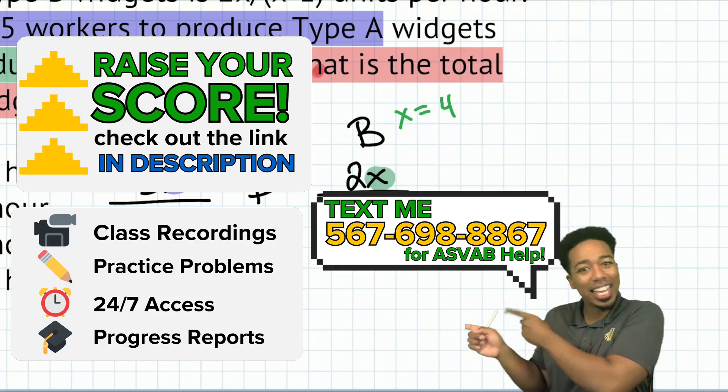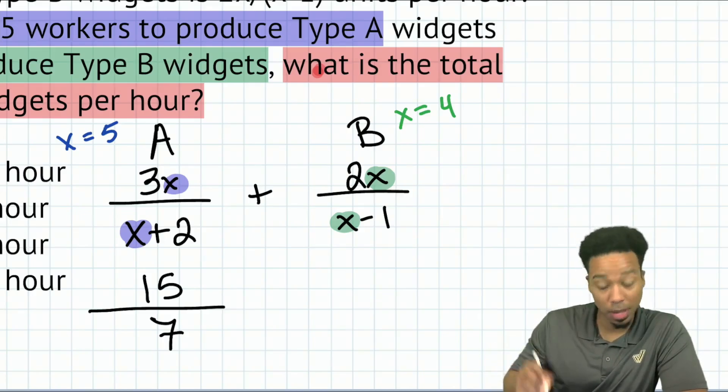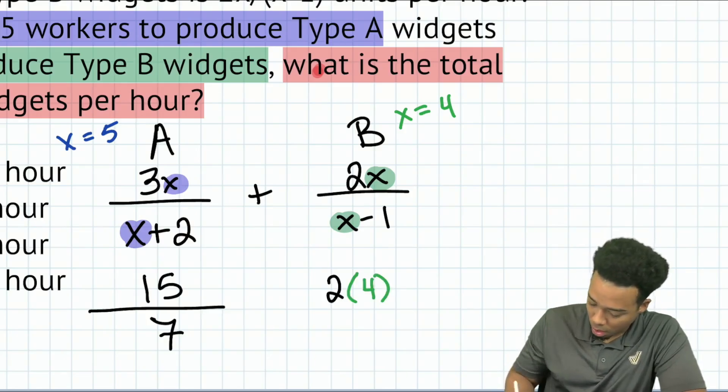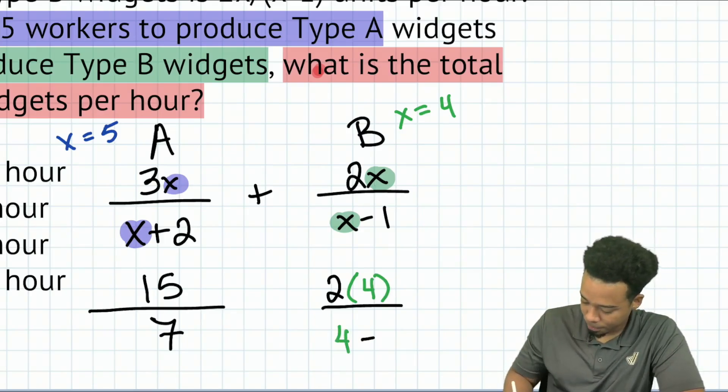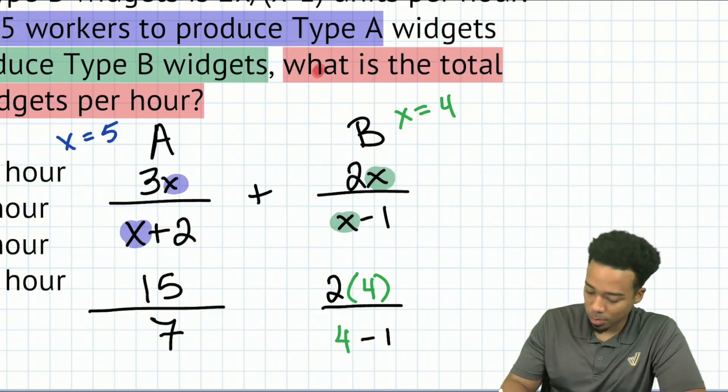So with that, let's keep it going here. My party people, we have 2x divided by x minus 1. Let's plug in that four. So we will have two multiplied by four all over, and that's going to be four minus one. Okay. So now what we'll do is we'll go ahead and do the same thing we did before. Simplify here.